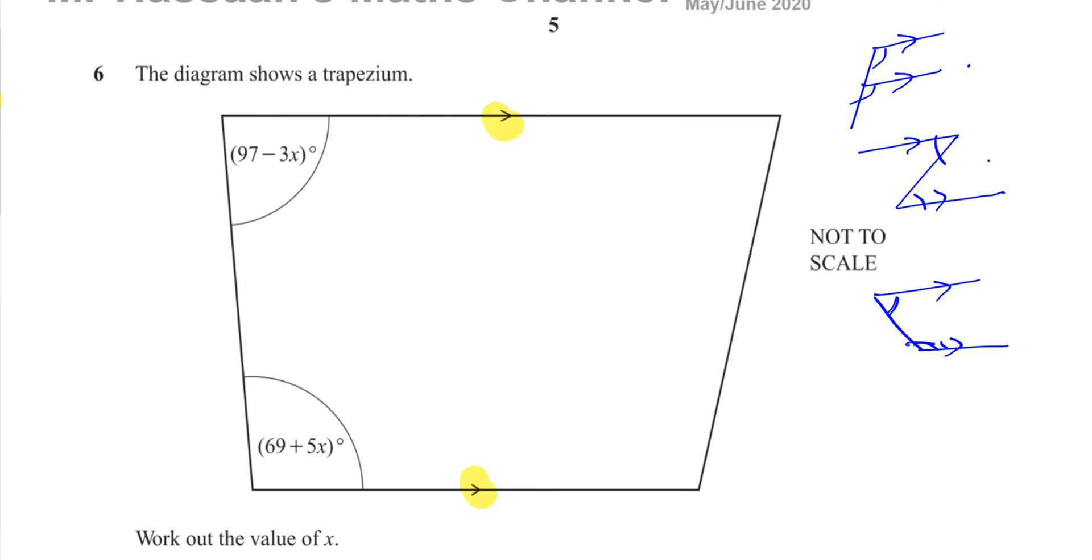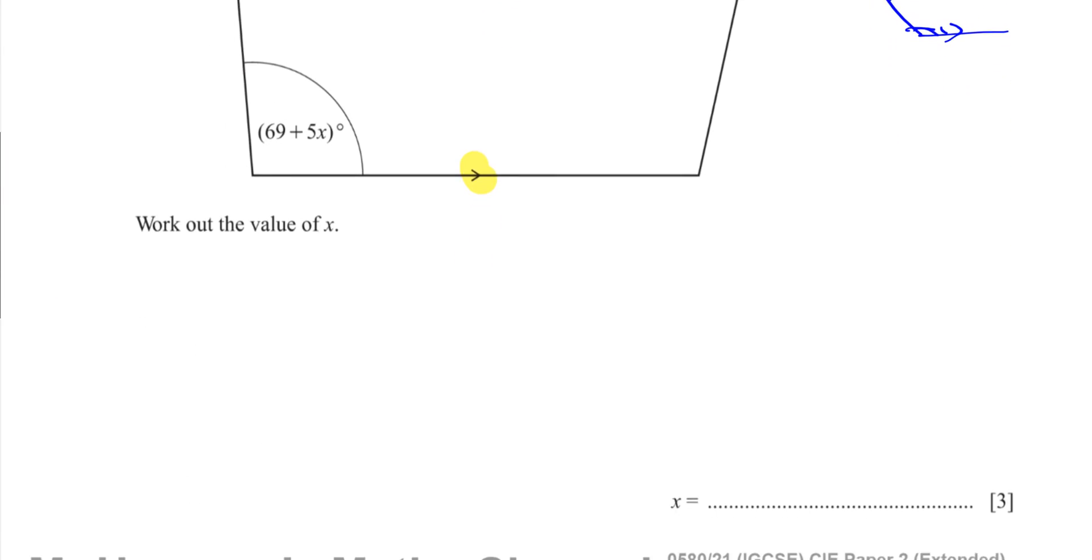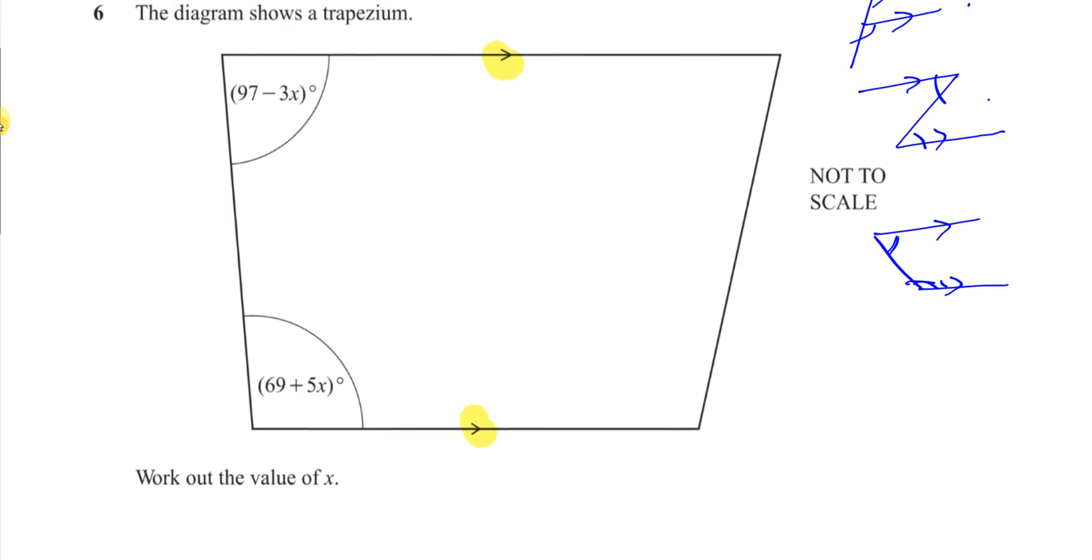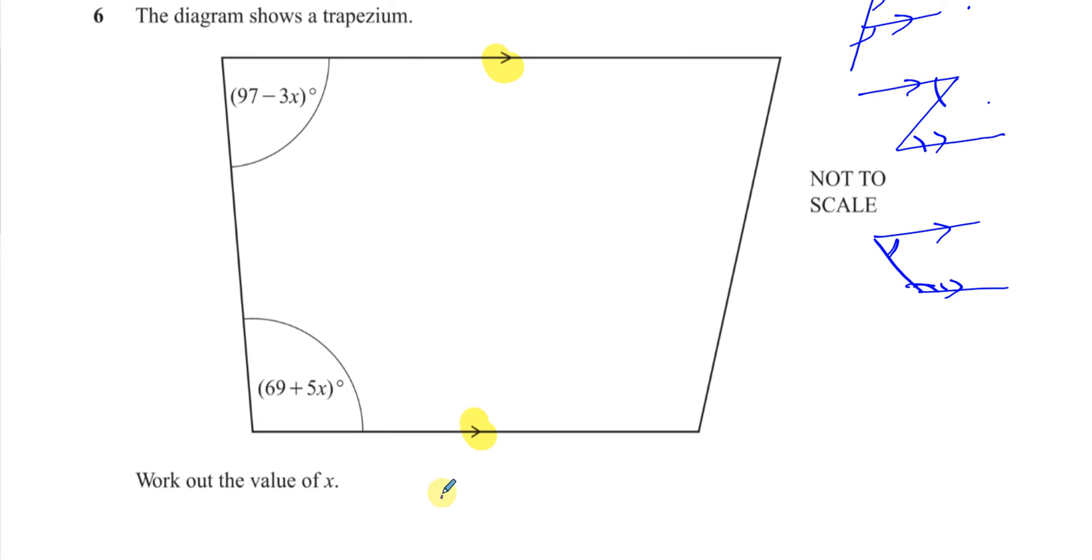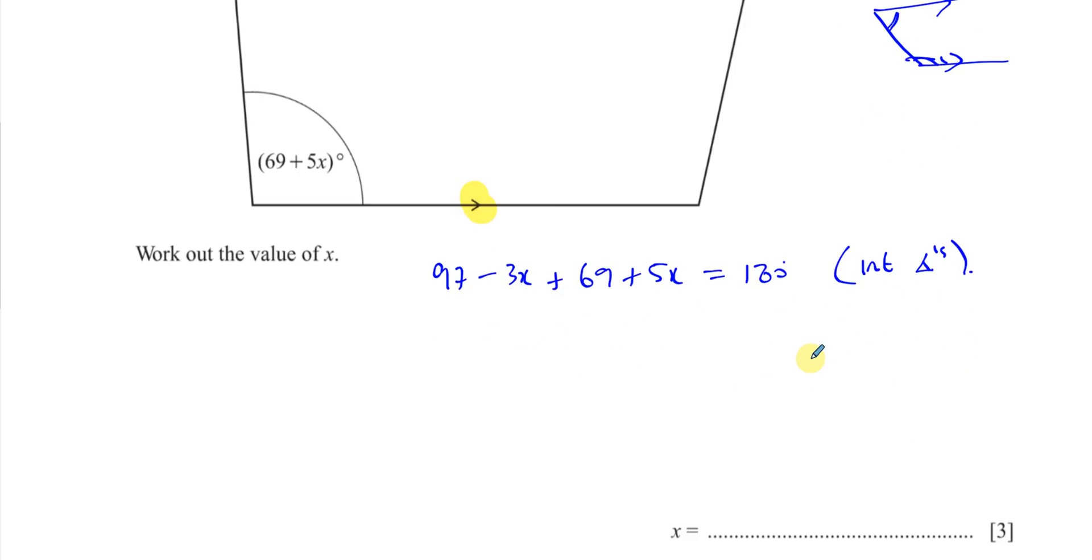So if you want to find the value of X, we can say 97 minus 3X plus 69 plus 5X must add up to 180 degrees because they are interior angles. You don't have to write the reasons here. They're not mentioned for you to do. But if you do, it's always more complete.